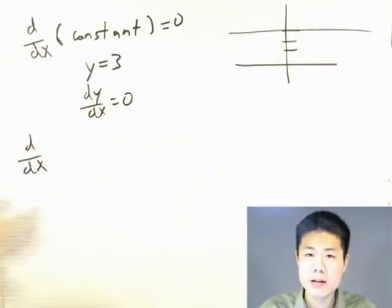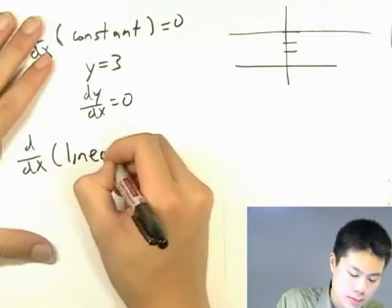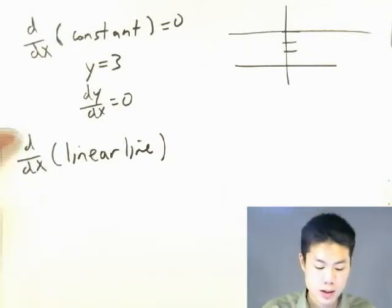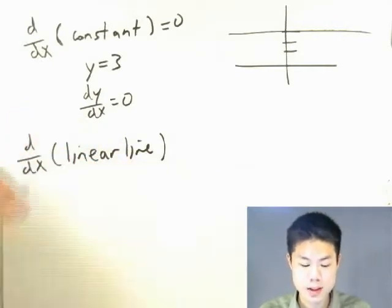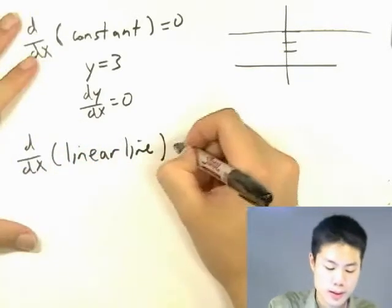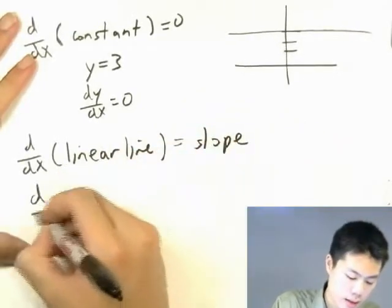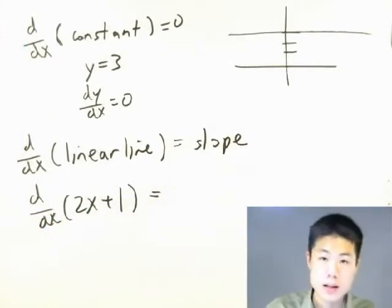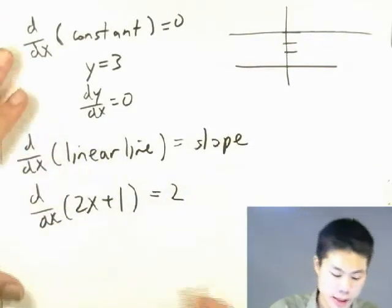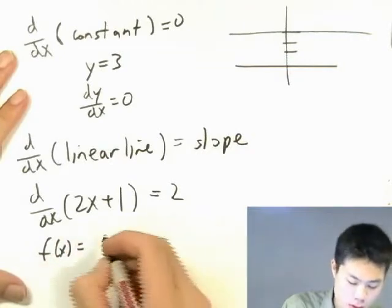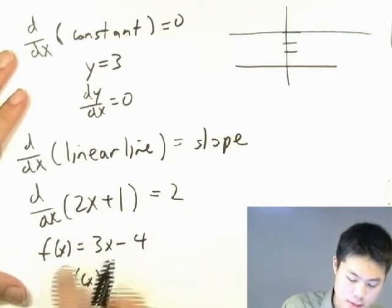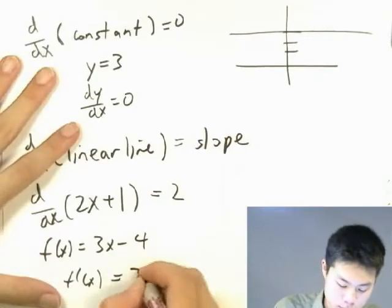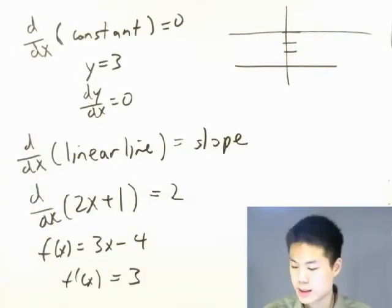What about taking the derivatives of linear lines? A linear line has the same slope throughout its entire graph, and taking a derivative means finding its slope. So the derivative of a linear line is its slope. For example, the derivative of 2x plus 1 with respect to x is 2. And if f of x equals 3x minus 4, then f prime of x equals 3. That was the easy part.